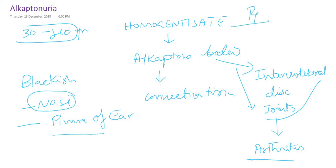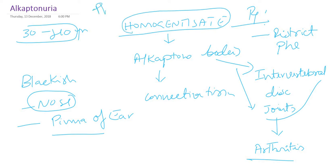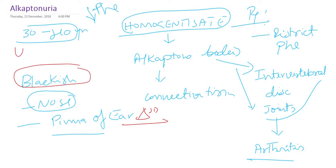For treatment, since this is not a fatal disease, we restrict phenylalanine intake, because homogentisic acid is an intermediate in phenylalanine metabolism. If you restrict phenylalanine, there will not be much homogentisic acid produced. Diagnosis is very simple because the urine turns black. Just collect the urine and keep it aside for 5 to 10 minutes or even less — the urine will turn black.